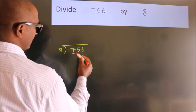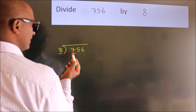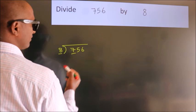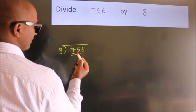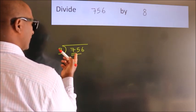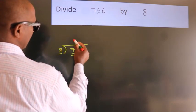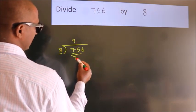here we have 7, here 8. 7 smaller than 8. So, we should take two numbers. 75. A number close to 75 in 8 table is 8 nines, 72.